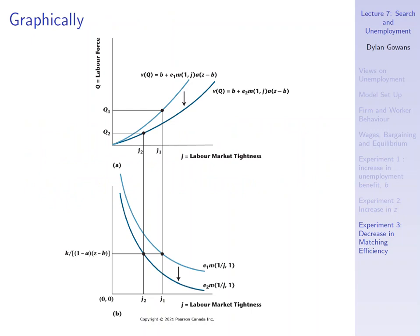A decrease in E means fewer matches, or a lower matching percentage for any J. And so skills are more mismatched, there will just be fewer job matches. So I skip right to the graph here, I'm not going to go through it step by step, but let's look at it piece by piece.